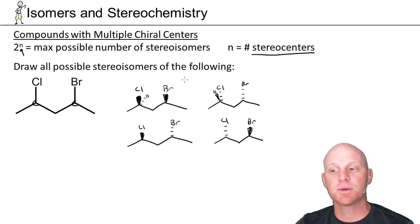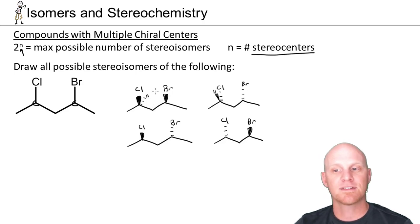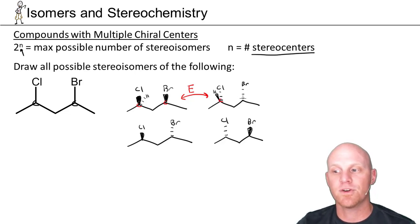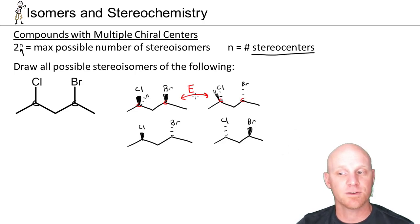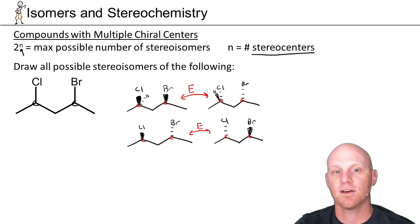Enantiomers and diastereomers are always relationships between two compounds. If I ask, is this compound on the left an enantiomer of the compound on the right? The answer is yes — these are enantiomers. They both have two chiral centers, and I've inverted both of them. When you invert all the chiral centers in a molecule, you get the enantiomer, assuming the molecule is chiral to begin with. Same thing for the bottom two — both chiral centers inverted, so they're enantiomers as well.